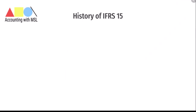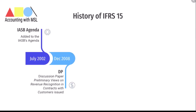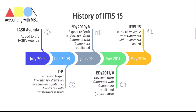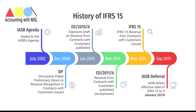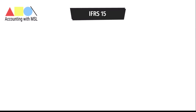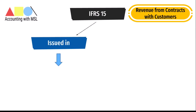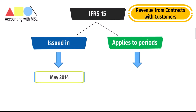As a standard, IFRS 15 has been through quite a long history, right from 2002 all the way to May 2014 when the standard was initially issued. In 2015, the IASB decided to defer effective implementation of the standard to 1st January 2018. So IFRS 15 Revenue from Contracts with Customers was issued in May 2014 and applies to annual reporting periods beginning on or after 1st January 2018.